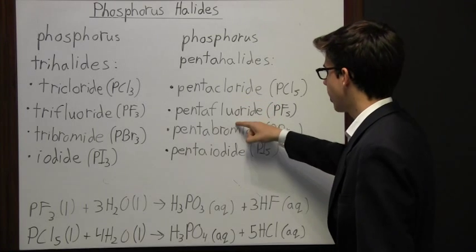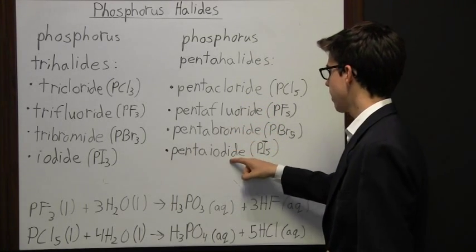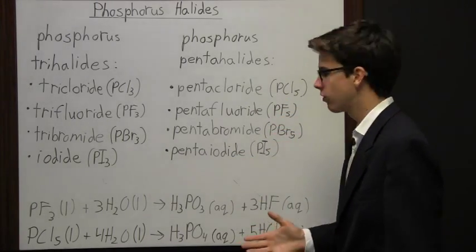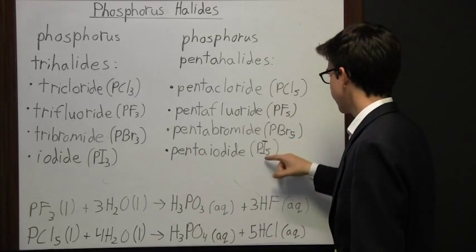So here we have phosphorus pentachloride (PCl5), phosphorus pentafluoride (PF5), phosphorus pentabromide (PBr5), and phosphorus pentaiodide (PI5). Again, we have P every time which stands for phosphorus in its elemental form, and then we have the halogens: chlorine, fluorine, bromine, and iodine.